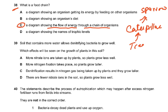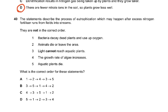Question 39: soil that contains more water allows denitrifying bacteria to grow well. What effect will be seen on plant growth? The answer is D — there are fewer nitrate ions in the soil, so plants grow less well. Denitrifying bacteria are harmful to farmers; they convert nitrate ions — which plants can absorb — into nitrogen gas that escapes into the air. This occurs in waterlogged soils.